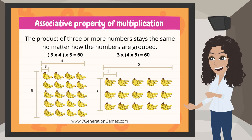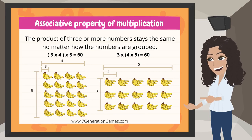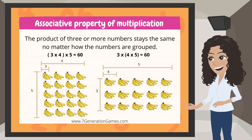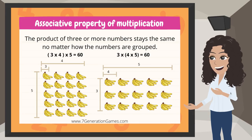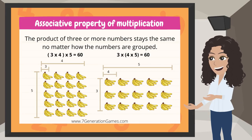In the example on the right, 4 times 5 is multiplied first, and then that product is multiplied times 3, which also equals 60.